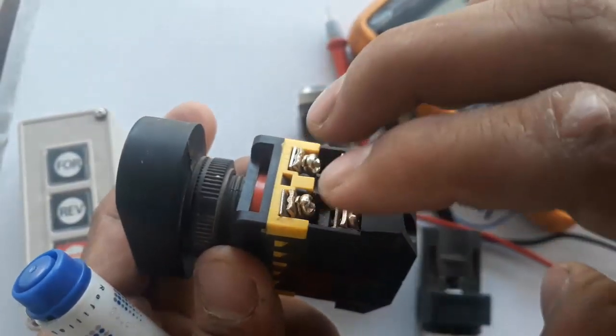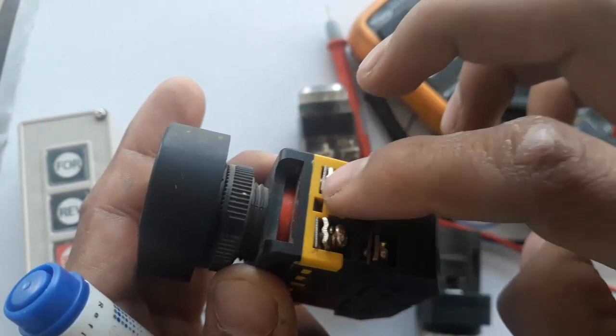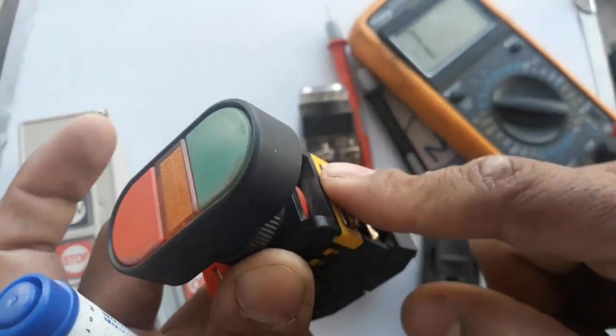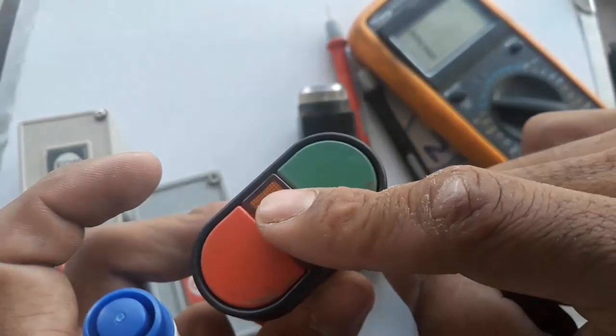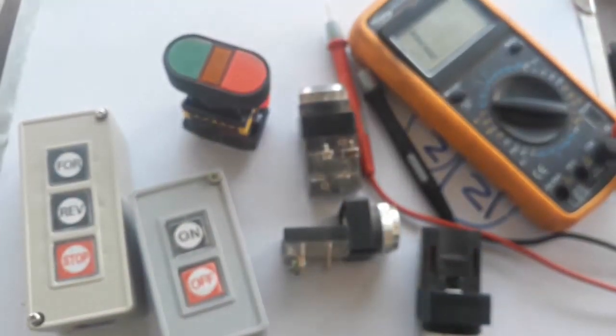Here I have some more contacts which are for the light indicator. So we can use it for a machine. When we start a machine, the light will show that the machine is started. So basically in next video tutorials, we will use it.